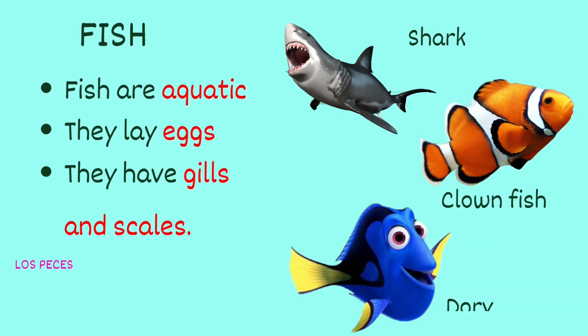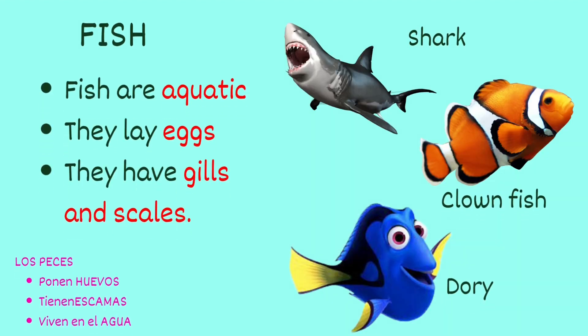The last group is fish. Fish live in the water — they are aquatic. They lay eggs and they have gills and scales.